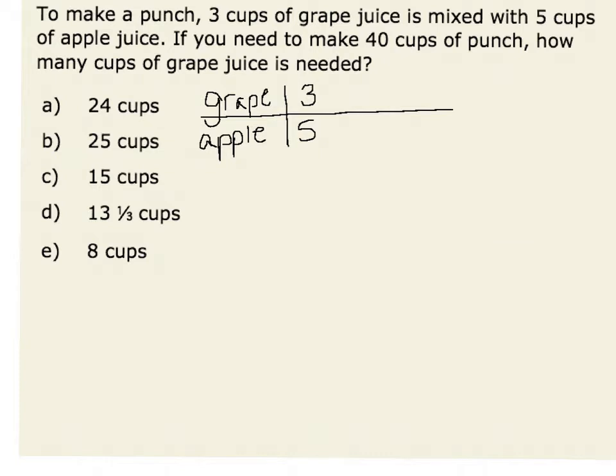I could also use a part-whole relationship to describe this ratio. That is, if I have three parts grape and five parts apple, the total amount of punch would be eight cups. Therefore, a part-whole ratio is three parts grape to eight total cups of punch.